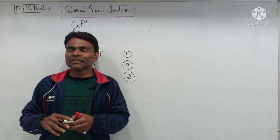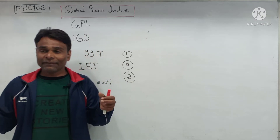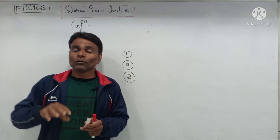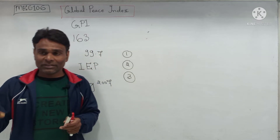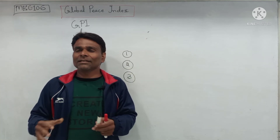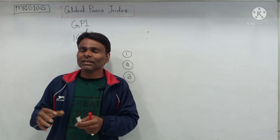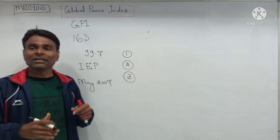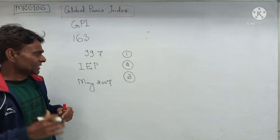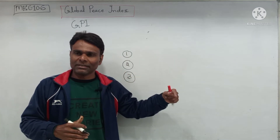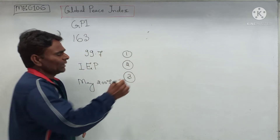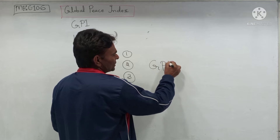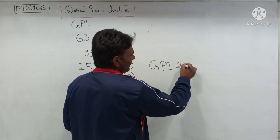It also considers harmonious relationships with neighboring countries and a very small proportion of the population being displaced as refugees, among other factors. These are suggestive measures of peace, and I am discussing the Global Peace Index 2021.